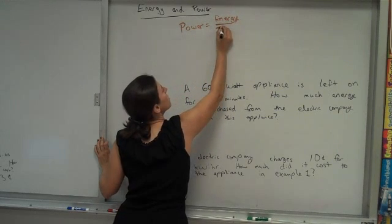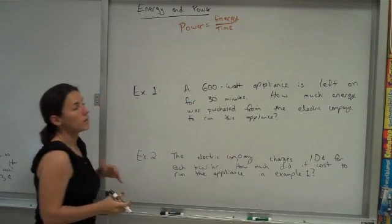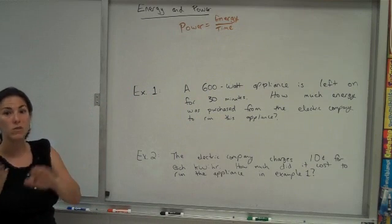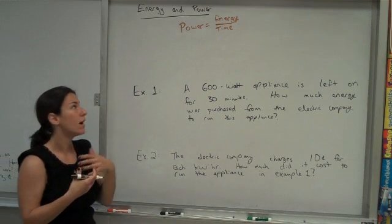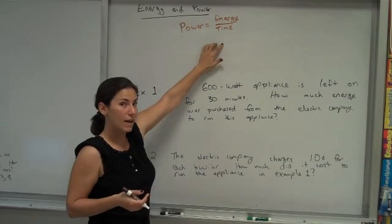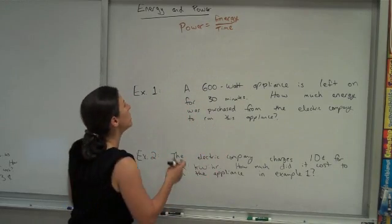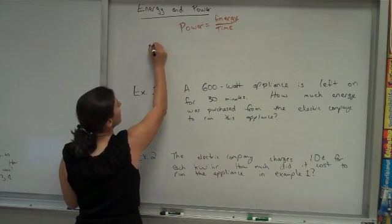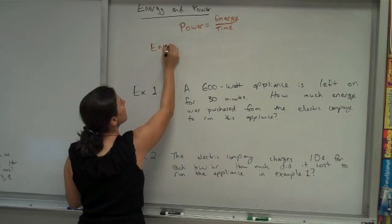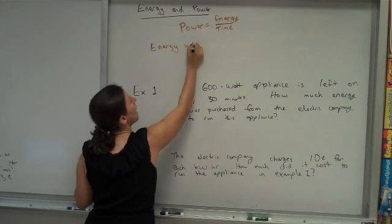Power is the rate of energy usage. So I can rewrite that energy equals power times time if I want to figure out, based on average power use and amount of time, how much energy is involved. So I'm just going to rewrite that twice, you'll see why. Energy is power times time.